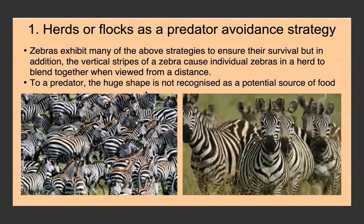Zebras exhibit many of those strategies which ensure their survival. In addition, the vertical stripes of zebras cause individual animals in a herd to blend together when viewed from a distance. To the predator, the large shape is not actually recognized as a potential source of food because the predator can't individualize one specific animal — it just sees one large shape and can't distinguish individual zebras.